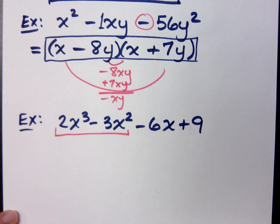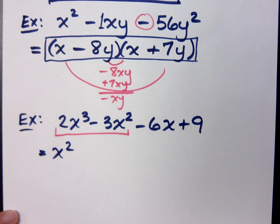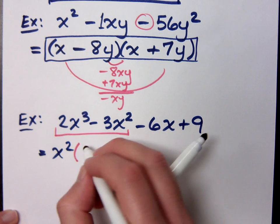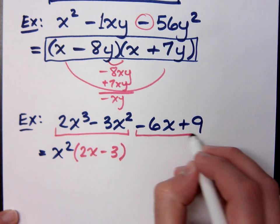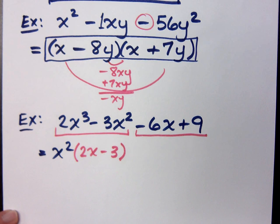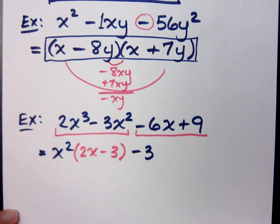What's the common factor in the first group? X squared. What are we left with? 2X and minus 3. In the second group, which begins with a negative — I get very upset when you lead with a negative — what must I do? Take out the negative along with the GCF of 3. Remember, when you take out a common factor it's as though you're dividing it out of all of those terms.